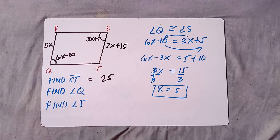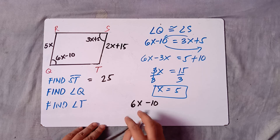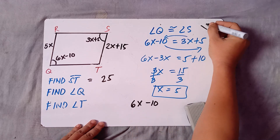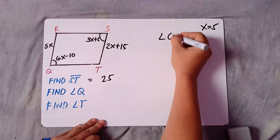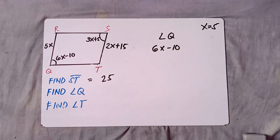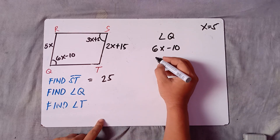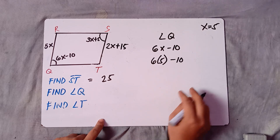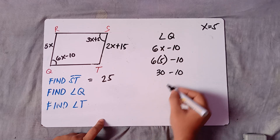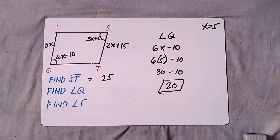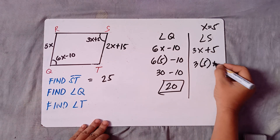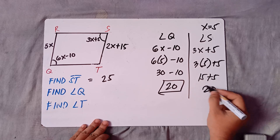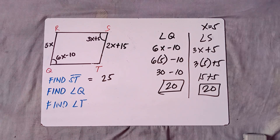Substitute X equals 5 into angle Q: 6 times 5 minus 10 equals 30 minus 10, which is 20. So angle Q is 20 degrees. Checking angle S: 3 times 5 plus 5 equals 15 plus 5, which is also 20. Same answer, because opposite angles are congruent.